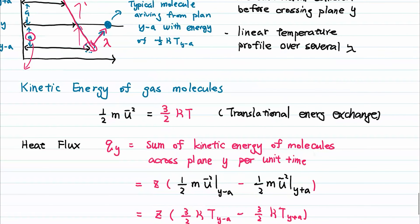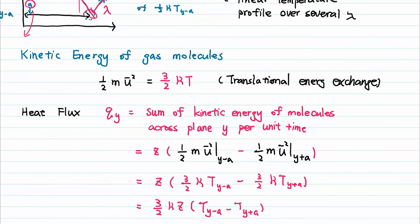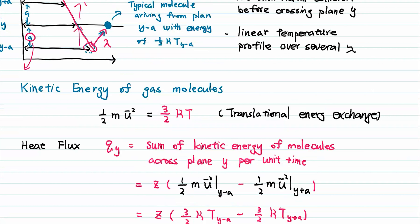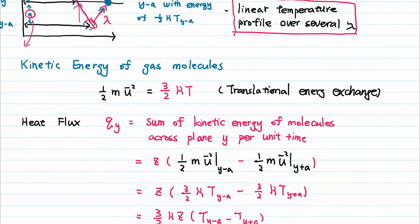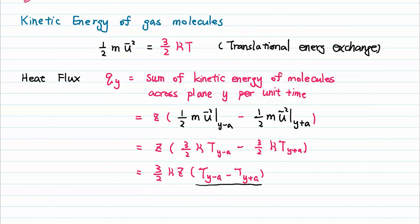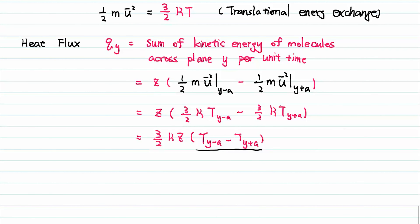Now let's go back to the temperature profile, because we want to figure out what's inside the parenthesis. We have the assumption that there's a linear profile of temperature over several mean free paths. The following is also from modern physics and kinetic theory.